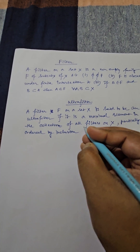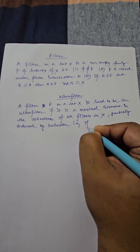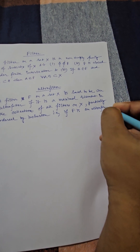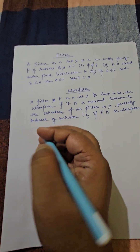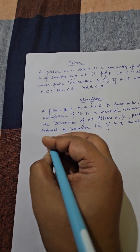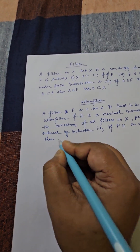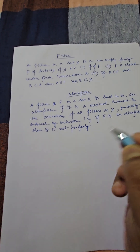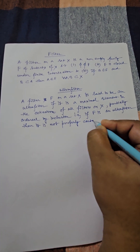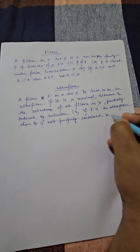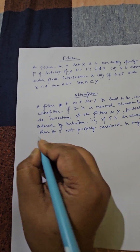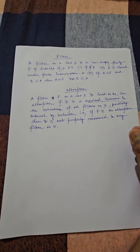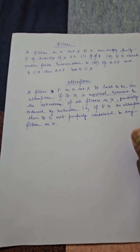Now what does it mean? That means if F is an ultrafilter, then it is not properly contained in any filter on X, because already we have said it is the maximal element — that is why it cannot be properly contained in any other filter defined over X.